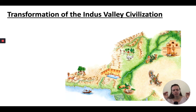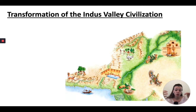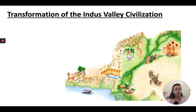Maybe there was a flood, or an earthquake, or a river dried up. Maybe we see salinization of their water supply, or malaria, or maybe they were conquered by the Aryans around 1500 BCE. We don't know.